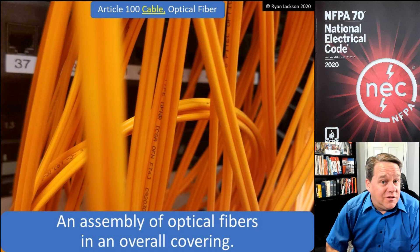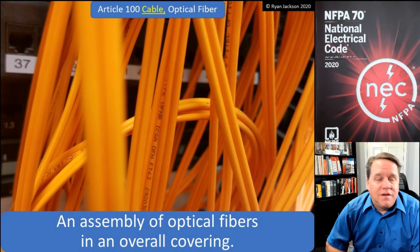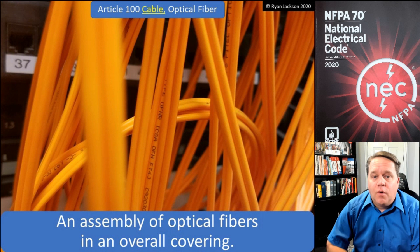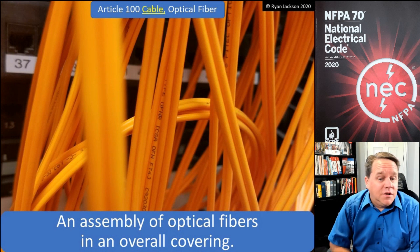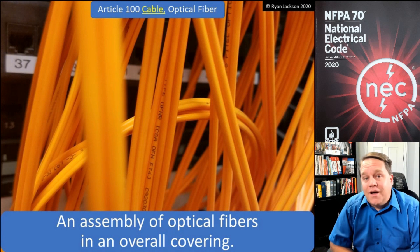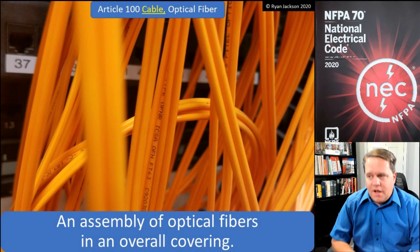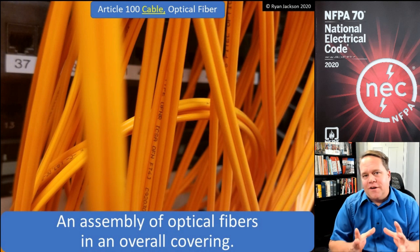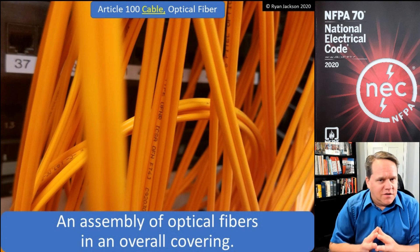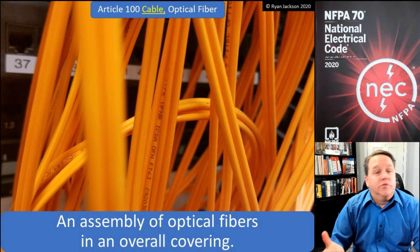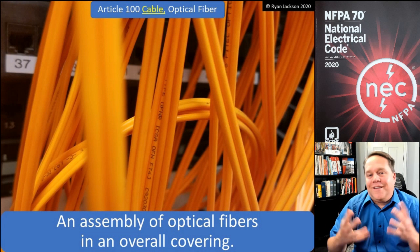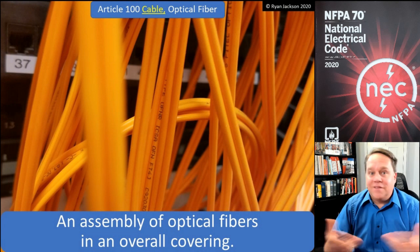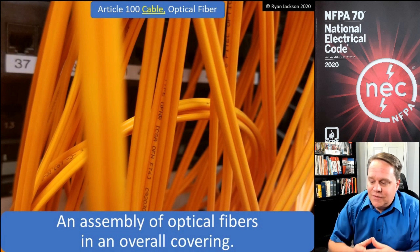We have some easy ones today: optical fiber cable and cable routing assembly. Optical fiber cable — or fiber optic — is an assembly of optical fibers in an overall covering. This is kind of strange when you first think about it, because optical fiber does not use electricity — it transmits light. So it begs the question: why is it in the National Electrical Code?